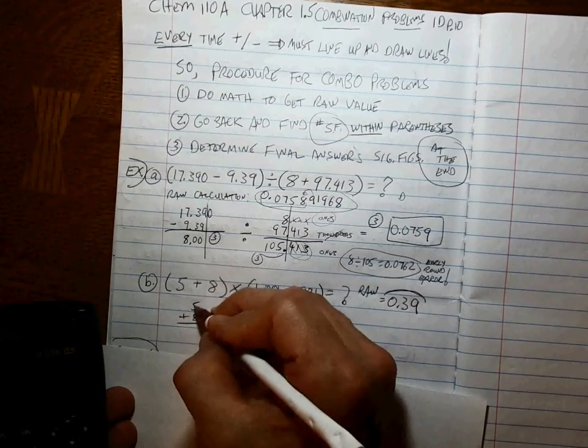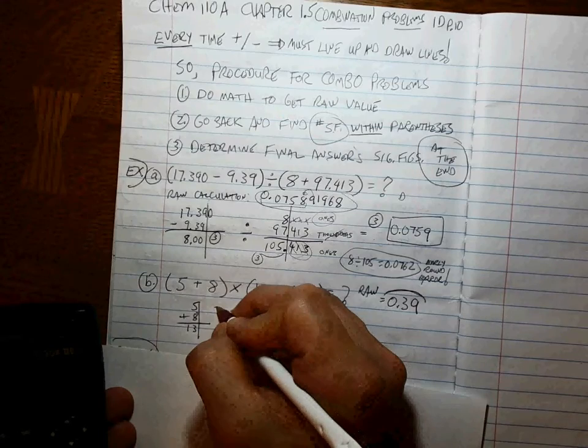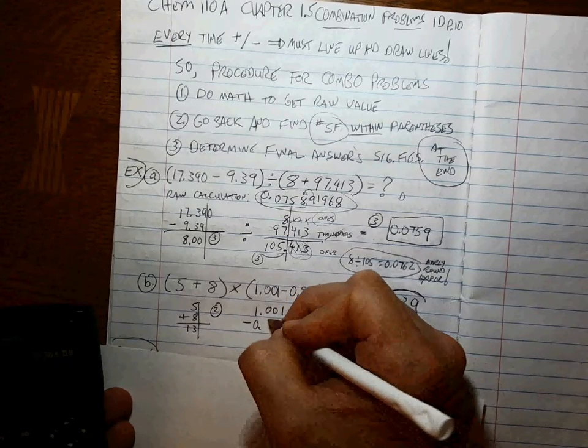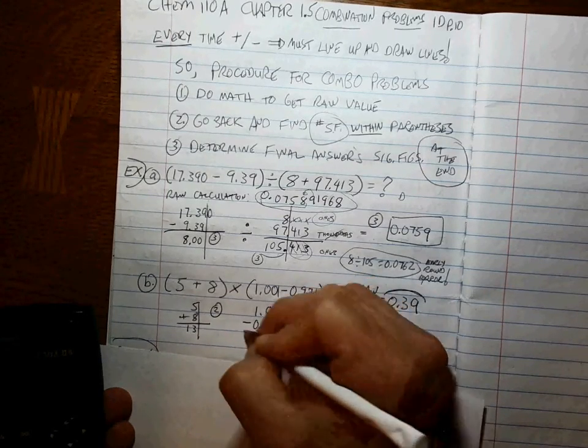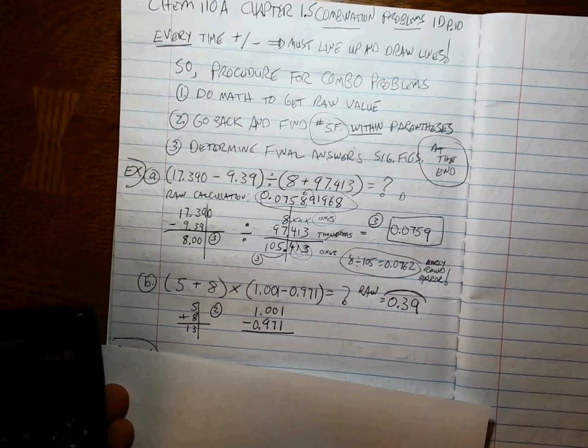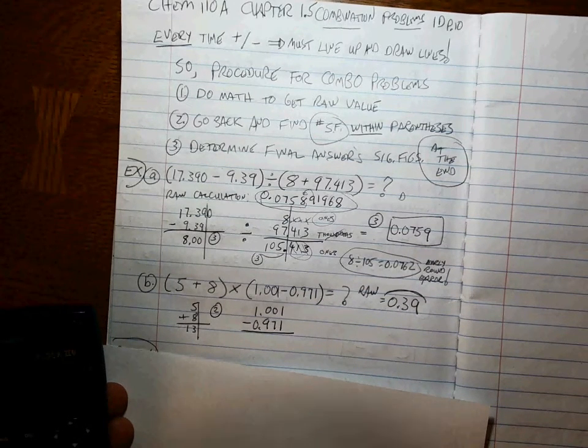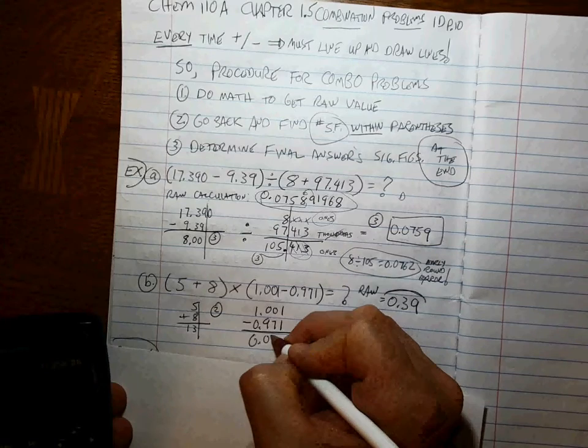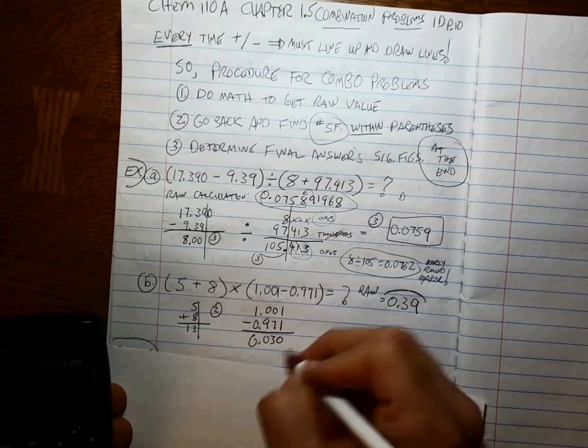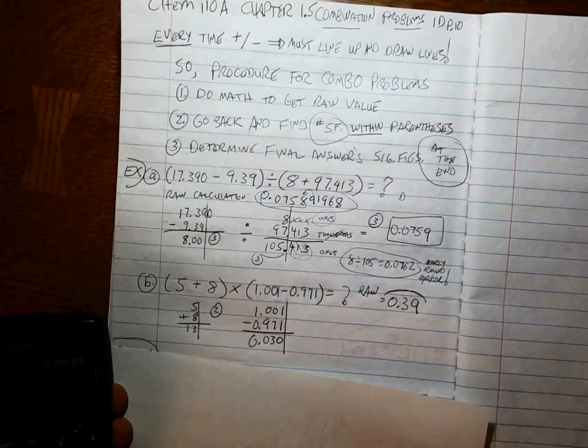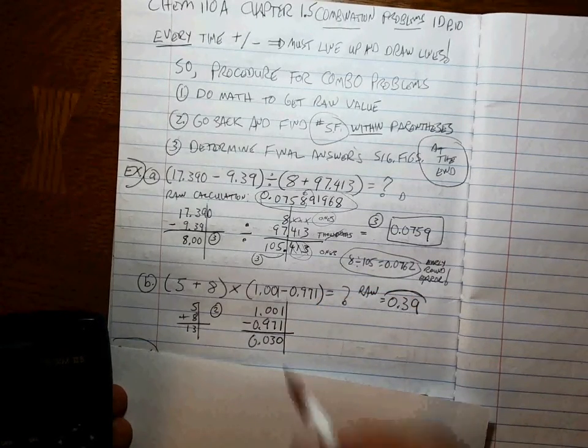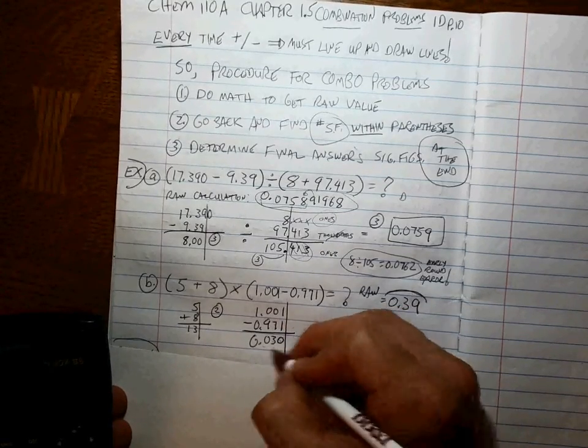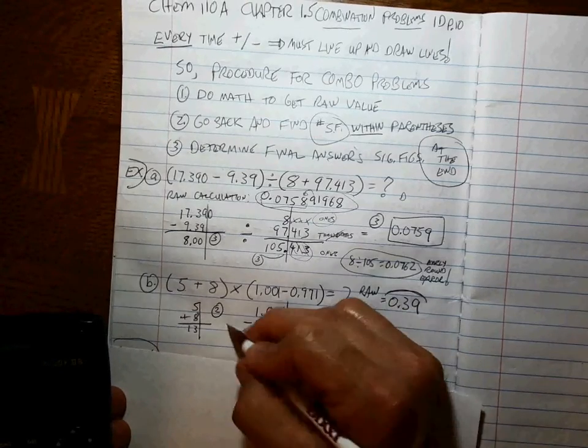Hmm. How many sig figs is that? Well, you've got to go back. 5 plus 8. I know you want to say that's one sig fig, but 8, 9, 10, 11, 12, 13. We're drawing the line there. This number has two sig figs. What about 1.001 minus 0.971? 1.001 minus 0.971. So, 0.030. Your calculator only gave you that. You have to draw the line there, don't you? Because this is three places past, this is three places past. The answer is three places past. So, this number has how many sig figs in it? 2.